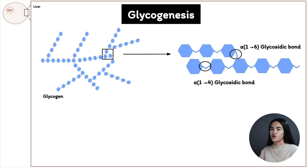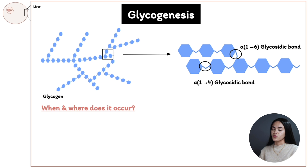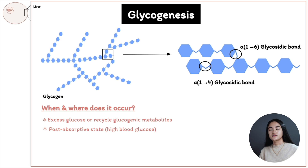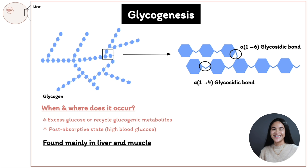The numbers 1 to 4 and 1 to 6 refer to the carbon numbers of the two units joined together. Glycogen is formed when there is excess energy and high blood glucose levels — this is after meals, in the post-absorptive state. Glycogen synthesis occurs in the liver and skeletal muscle.